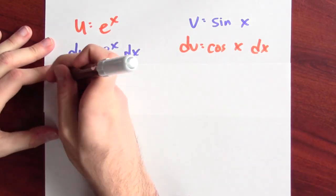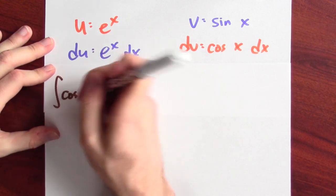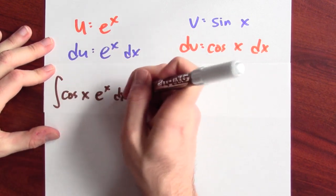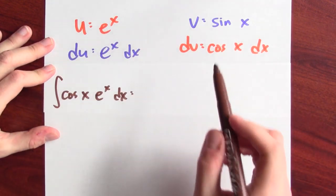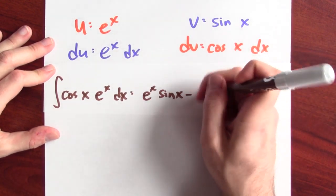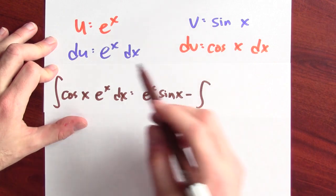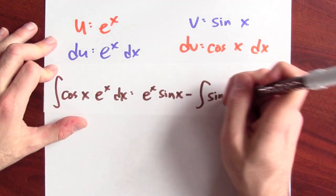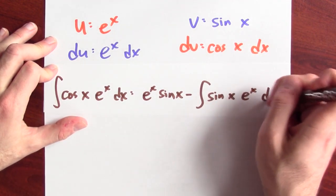Now, what does integration by parts say? Then, the anti-derivative of cosine x e to the x dx is u times v. So, e to the x sine x minus the integral of v du. So, sine x e to the x dx. Well, that didn't really help matters. But the word of the day is persevere.